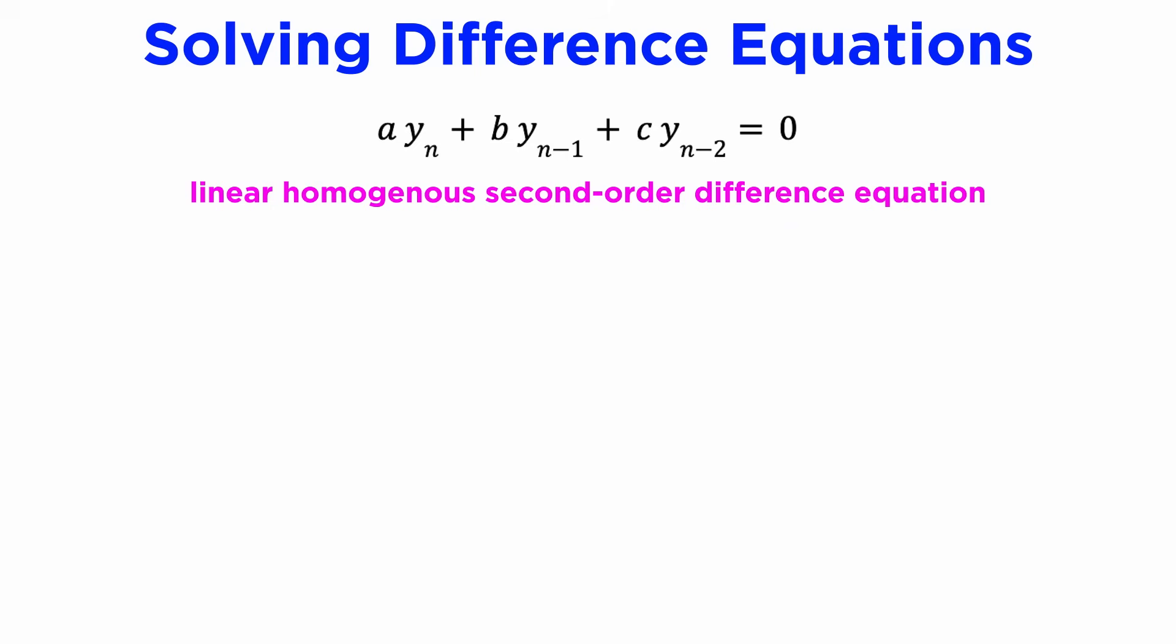For a general linear homogeneous second order difference equation with constant coefficients a yn plus b yn minus 1 plus c yn minus 2, where we note that the yn's are in descending order from left to right, the characteristic equation is a lambda squared plus b lambda plus c equals 0. We solve this quadratic equation to get our roots, lambda 1 and lambda 2.